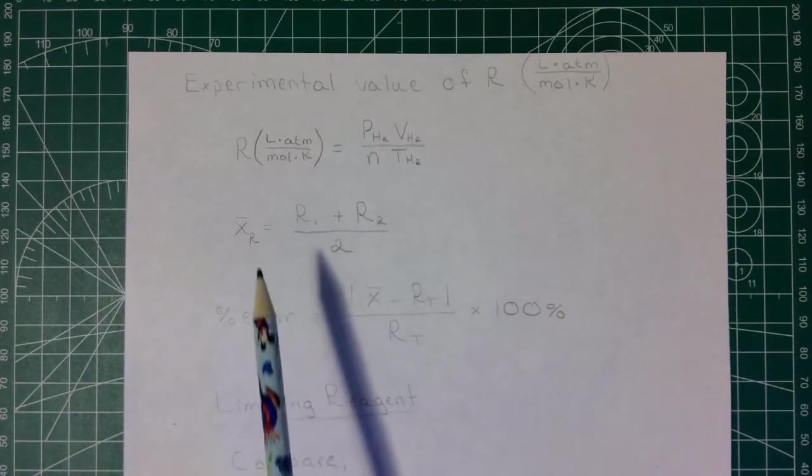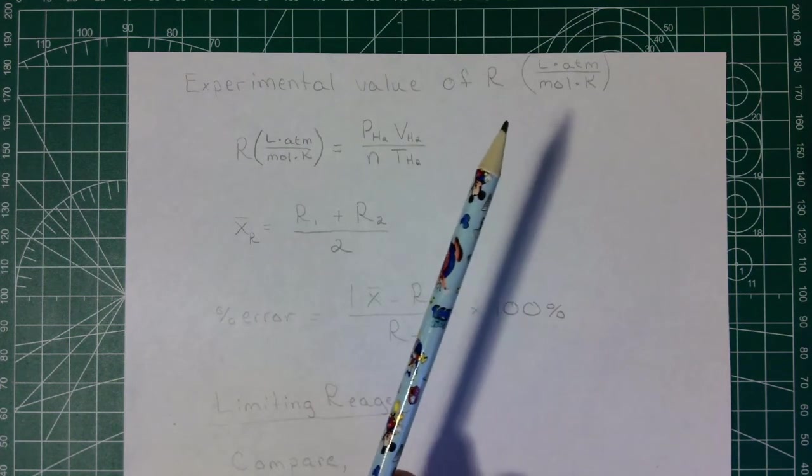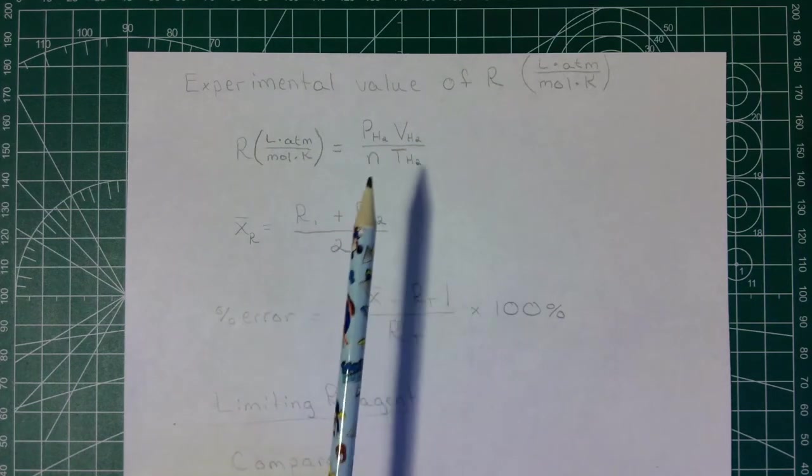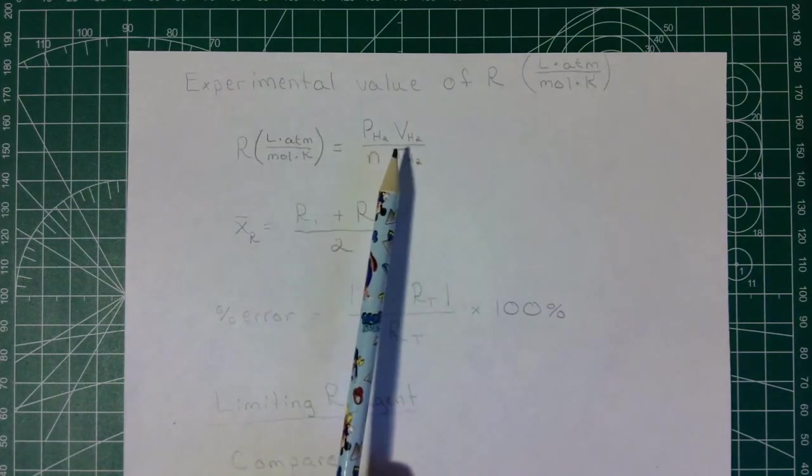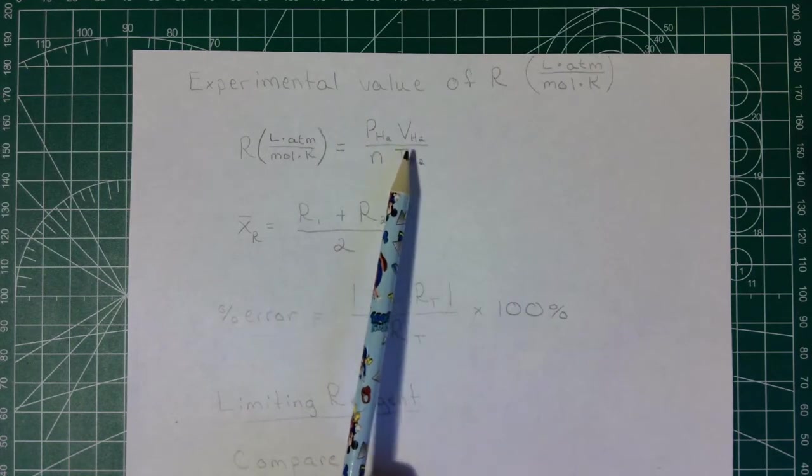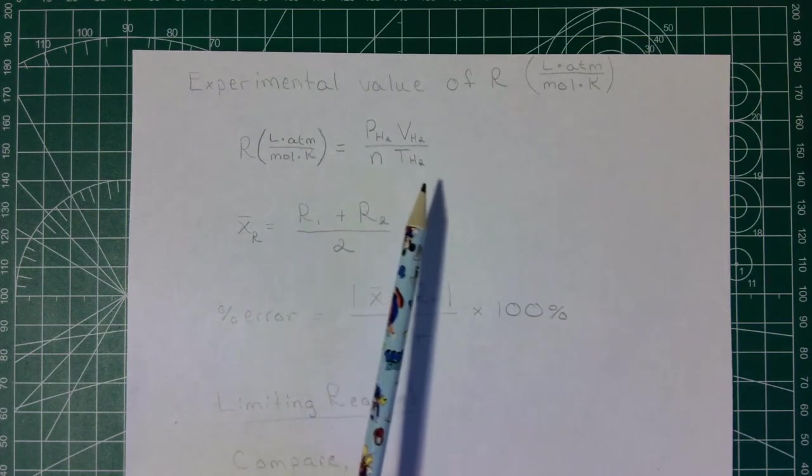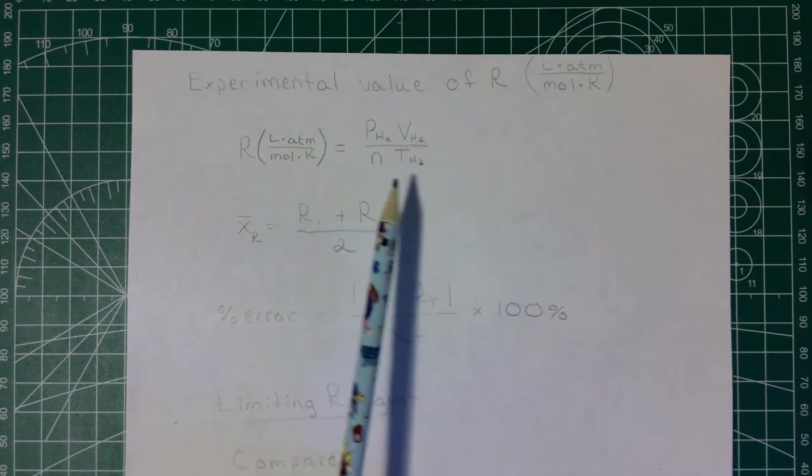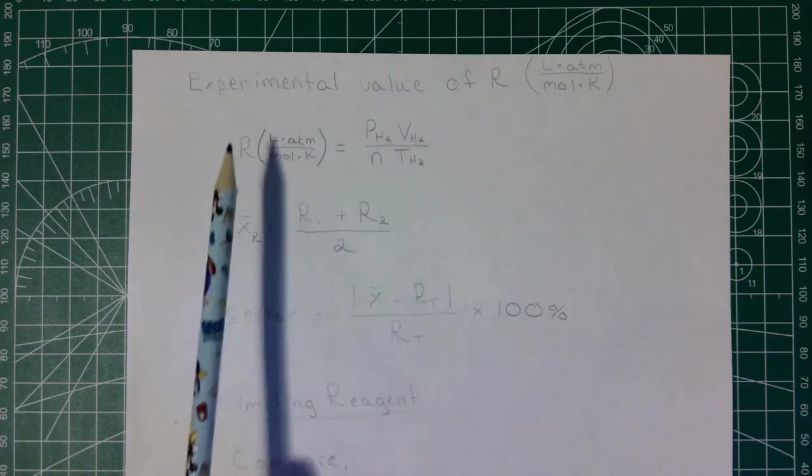Next they're going to want us to calculate the experimental value of R in units of liter atmospheres per mole Kelvin. To do that, we're going to take the P H2 that we just calculated multiplied by the V H2 divided by the n times the T H2 that we calculated. So we're assuming here that the hydrogen is behaving ideally and we can apply the ideal gas law.